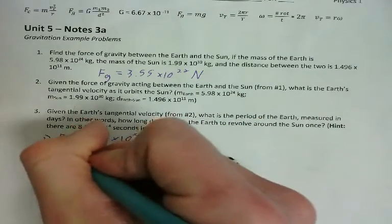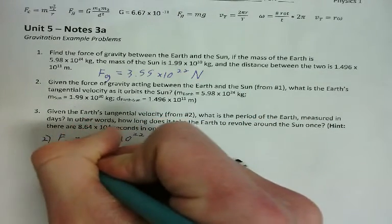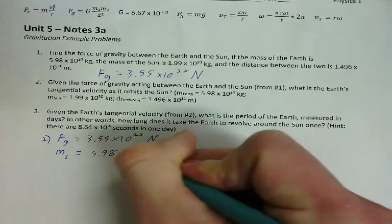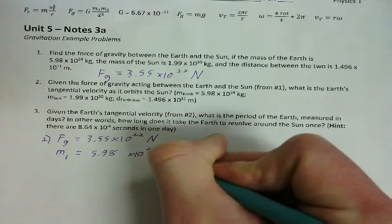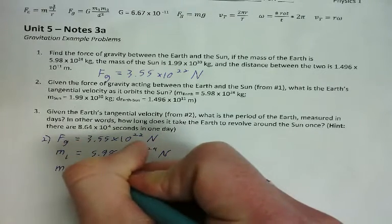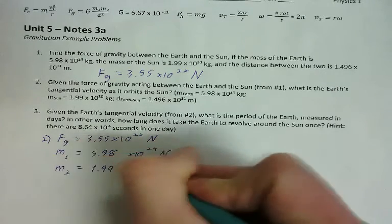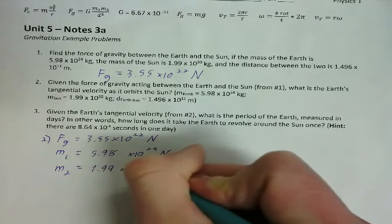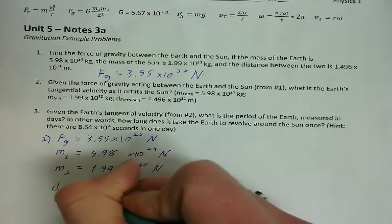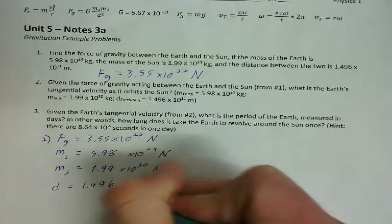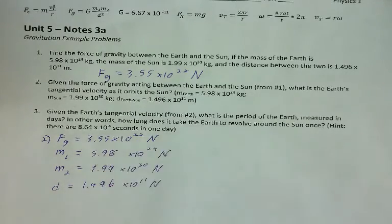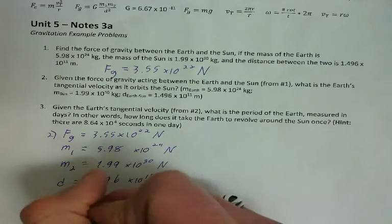So before we just start jumping in and trying to solve an equation, let's think about what we have and what we're solving for. So for number two, we have the force of gravity between the earth and the sun, 3.55 times 10 to the 22nd newtons. We've got the mass of each. So we'll call the mass of the earth M1, that's 5.98 times 10 to the 24th. We have the mass of the sun, we'll call that M2, which is 1.99 times 10 to the 30th. We have the distance between the two, which is 1.496 times 10 to the 11th.